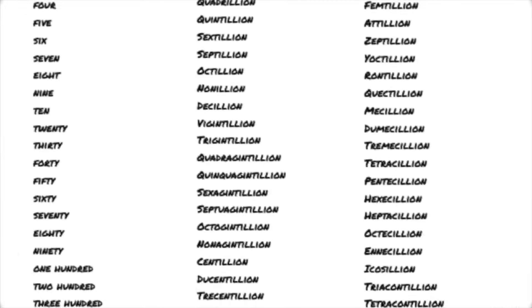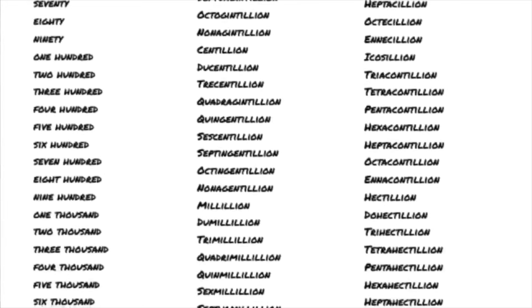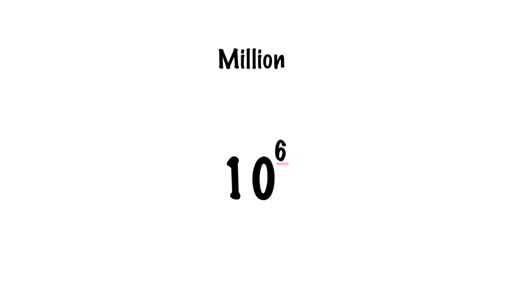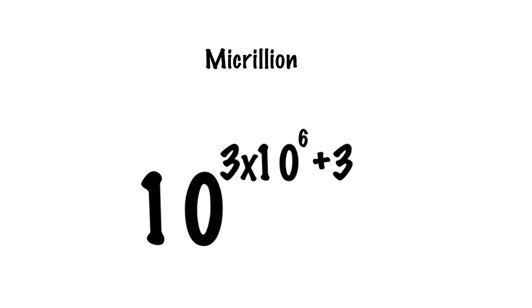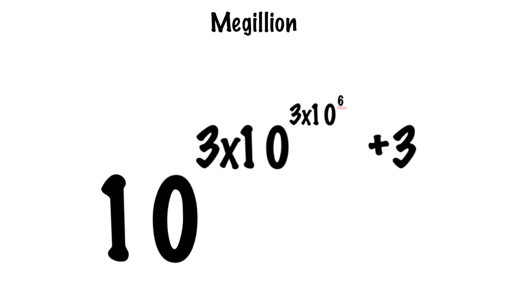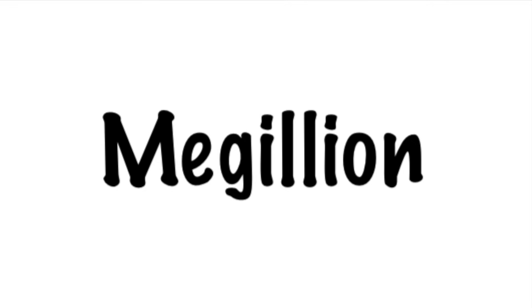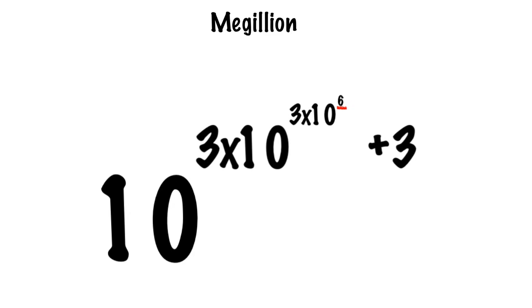If you recall from the end of last video, we had gotten a pretty good idea of the pattern that these naming conventions follow. You begin by counting the numbers themselves, then you begin counting the number of digits in the numbers themselves, and then you're counting the number of digits in the number of digits of the numbers themselves — resetting every time you get to another prefix that means one million, and then continuing to count up.